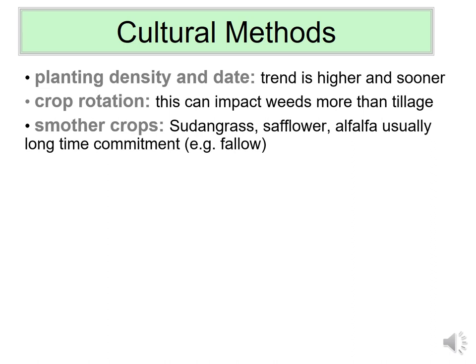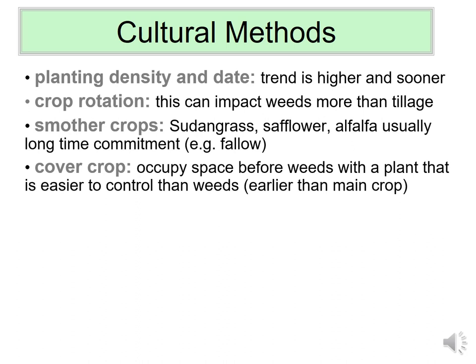One example of a smother crop is alfalfa. Alfalfa is very stressful for weeds because it gets mowed every month, and very few weed plants can handle that. Timing irrigation and mowing properly can very much favor the alfalfa and disfavor the weeds. This is usually a longer-term commitment. Cover crops, by contrast, are usually a shorter-term commitment — done in the same season your primary crop will be planted.